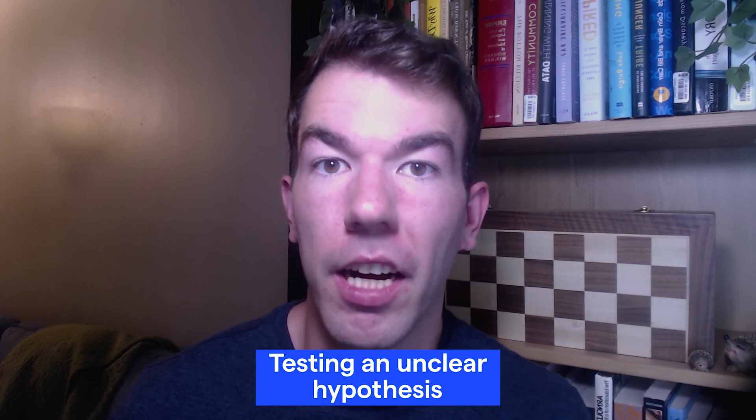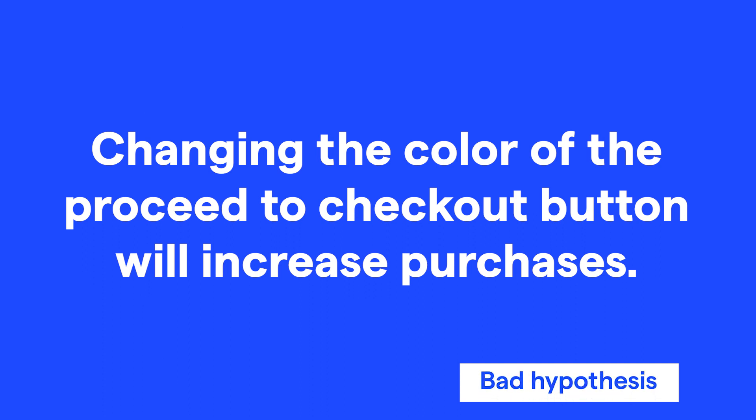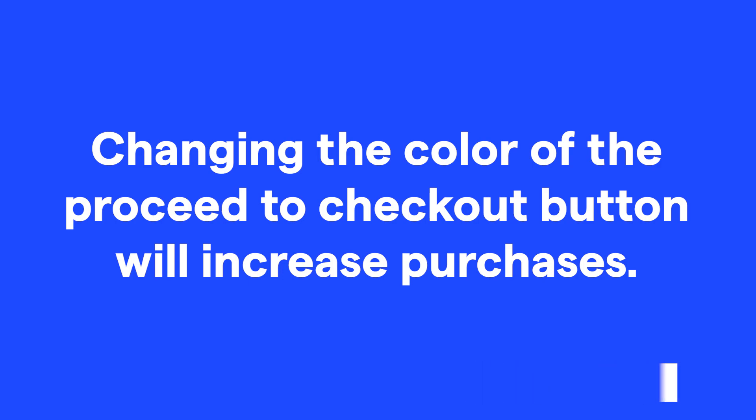Seventh is testing an unclear hypothesis. Having a clear definition of what you are testing and why helps you determine which metrics to measure and analyze. An example of a bad hypothesis is: 'changing the color of the proceed to checkout button will increase purchases.' This is unclear on why we are testing the change and why we expect it to increase results — and as a result, it's unclear what we need to measure. Do we only need to track button clicks, or something else as well?